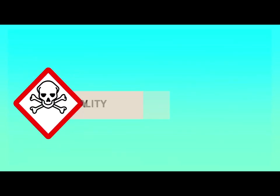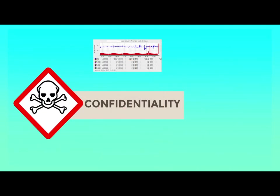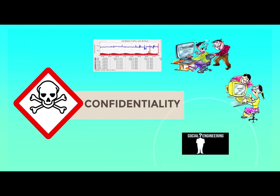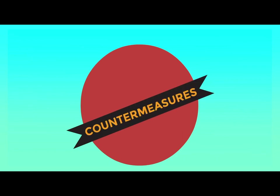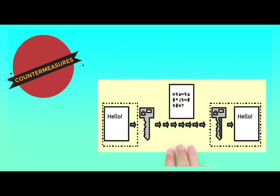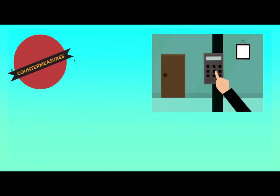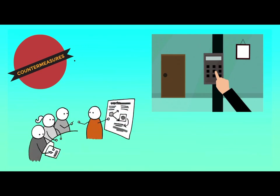The threat sources to confidentiality are network monitoring, shoulder surfing, stealing password files, and social engineering. Countermeasures to address these threats are encrypting data as it is stored and transmitted, using network padding, implementing strict access control mechanisms and data classification, and training personnel on proper procedures.